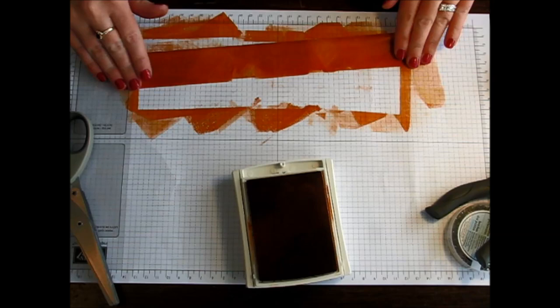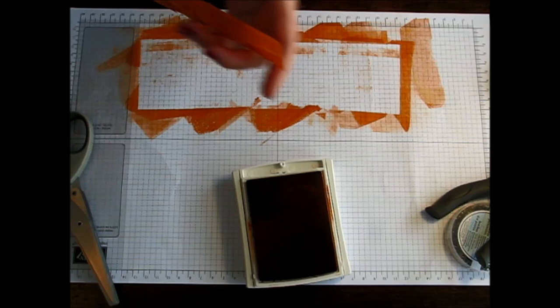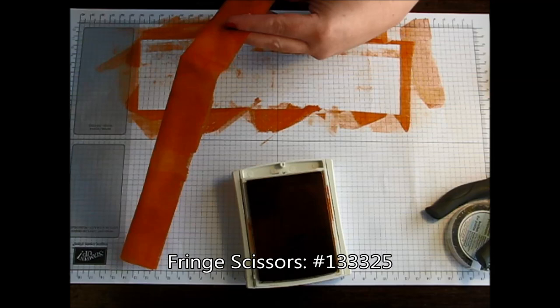Line it up, and it doesn't matter if it's not a perfect lineup. So now we have this little tube. You can see there, it's kind of like a tube. I'm just going to take my fringe scissors and start cutting.